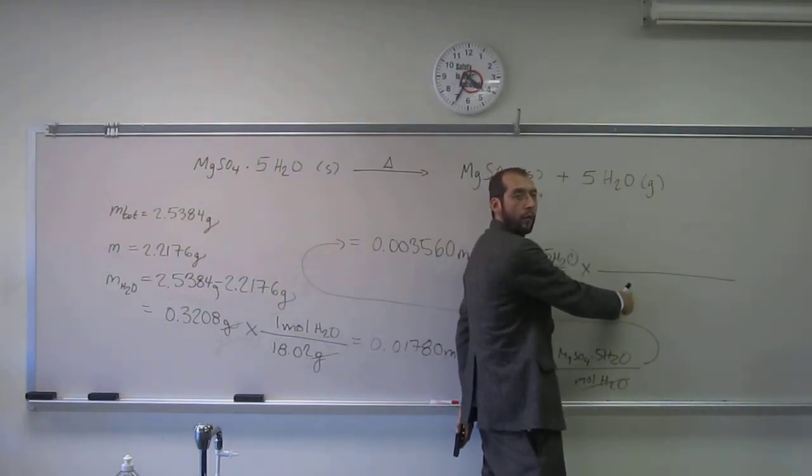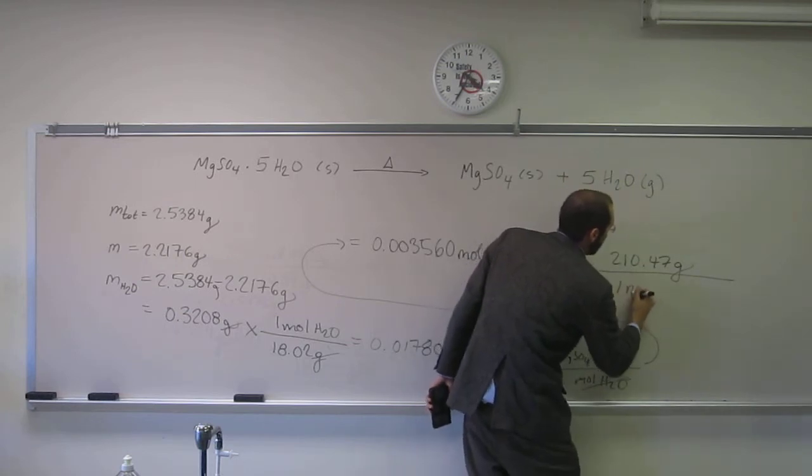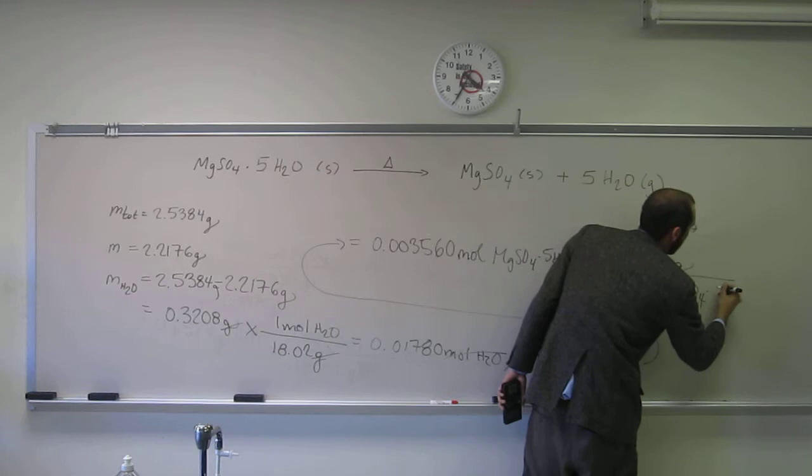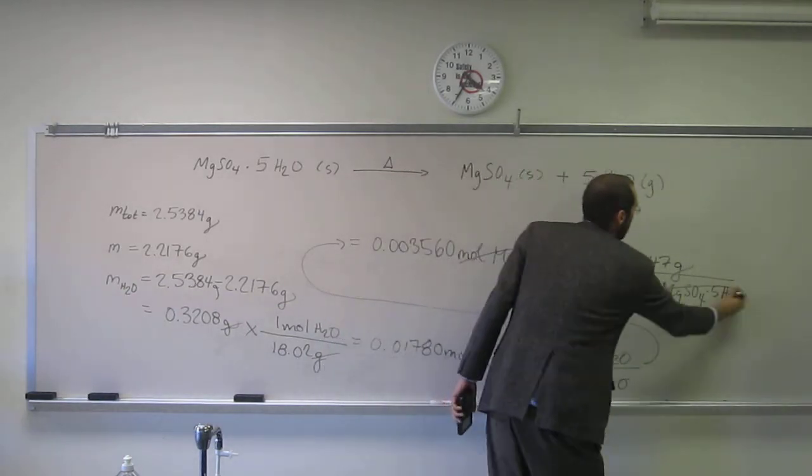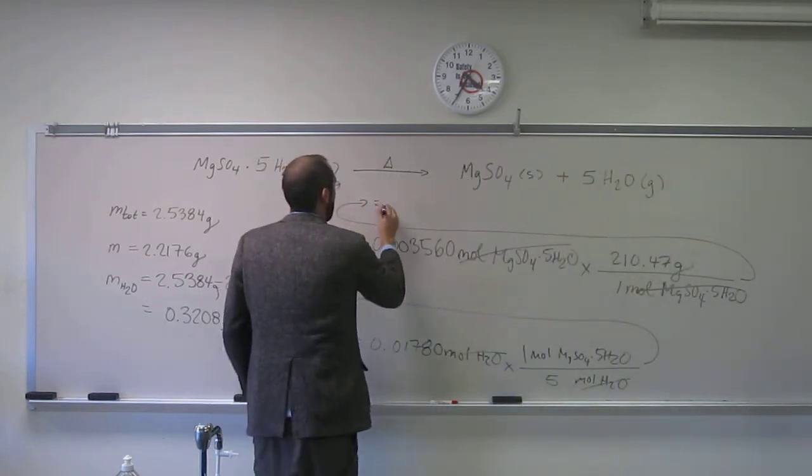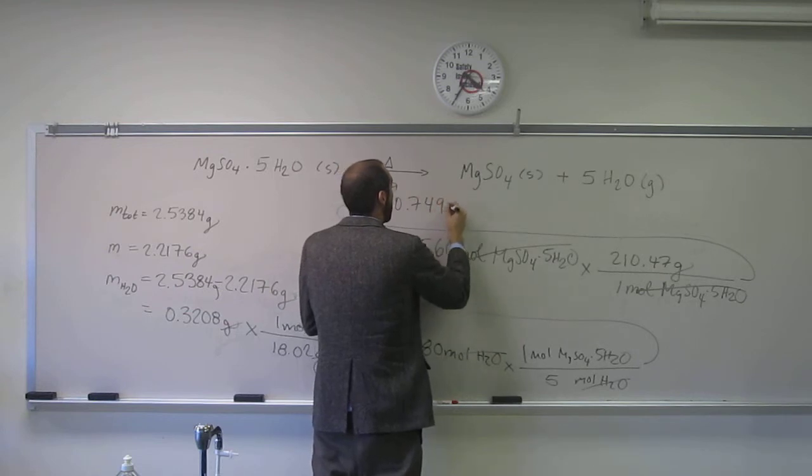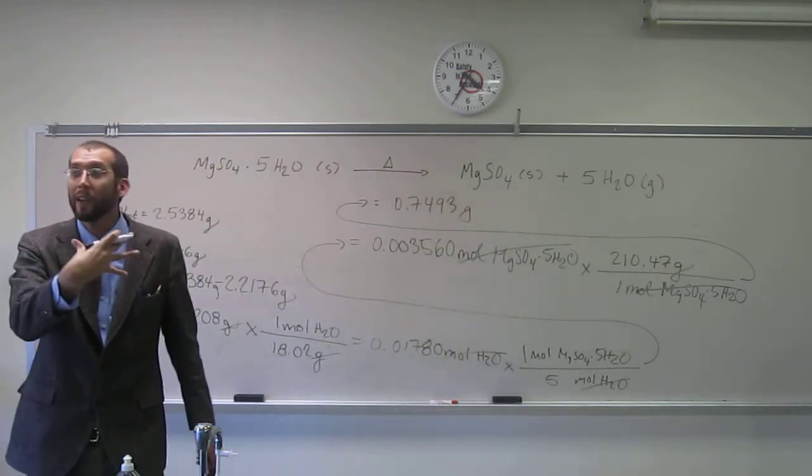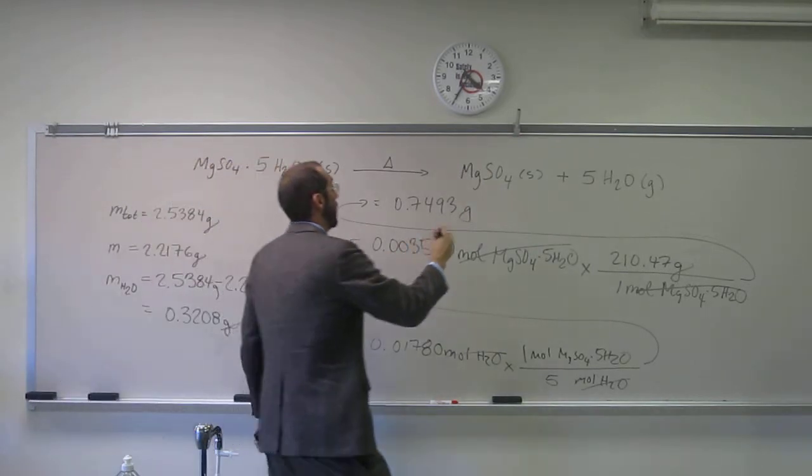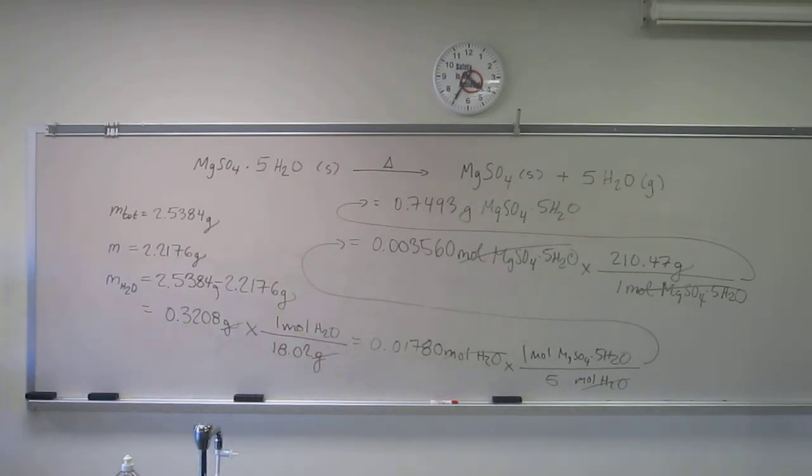So what's on the bottom here? Moles. So 210.47 grams per one mole MgSO4·5H2O. Did that give me grams? Yes. So just multiply it that way. 210.47 times 0.0178 equals 0.7493 grams. Is that mass percent? No. That's just the mass of mag sulfate pentahydrate. It wants the mass percent of the entire sample. What was the weight of the entire sample?